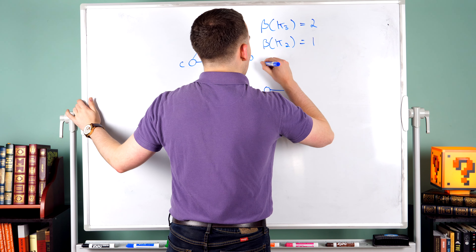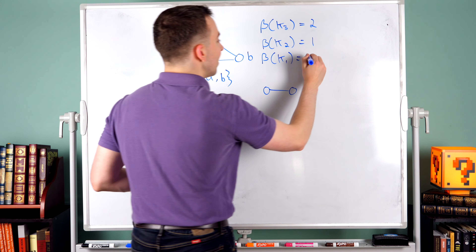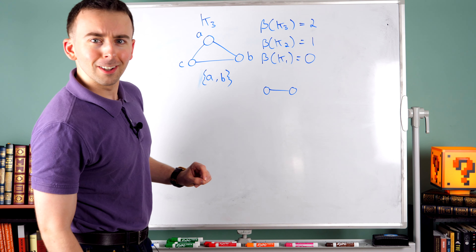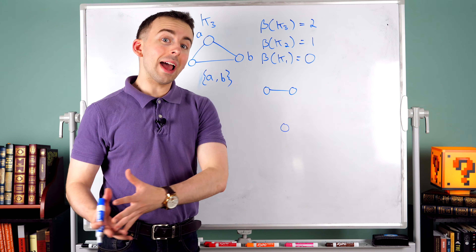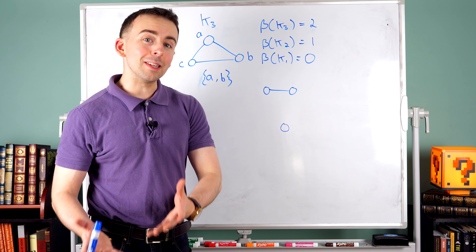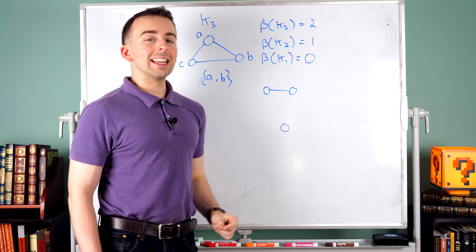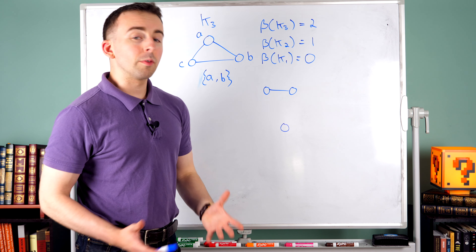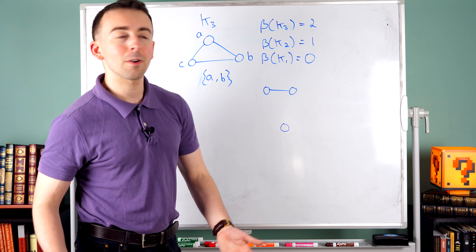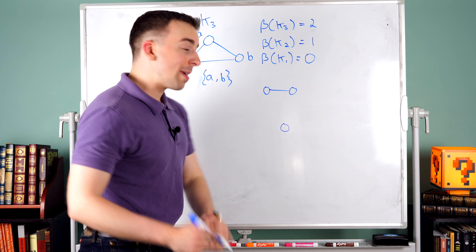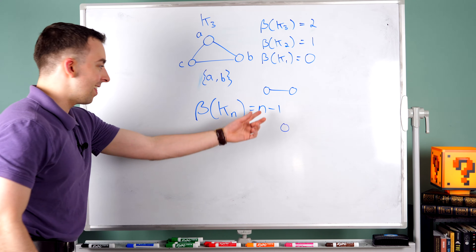Let's go all the way down to k1. The vertex covering number of k1 — if the pattern holds — should be one less than the number of vertices, which is zero. Does that make any sense? Well, k1 looks like this: it's a single vertex with no edges. So technically speaking, the empty set does cover all edges of the graph, and so we could say the covering number of k1 is zero. Although often you'll find that we just don't consider covering numbers of graphs with no edges, because there's nothing to cover. But we could say this is true, and so we may conjecture that in general the vertex covering number of a complete graph is one less than its order.